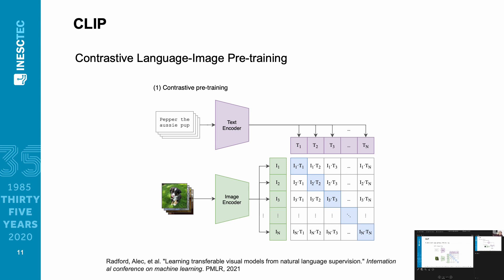In contrastive training, consider a batch of images and their corresponding texts. We want to maximize the similarity between the corresponding image-text pairs and minimize the distance between an image and the texts from other images in the batch — and vice versa. Looking at the matrix on the right, we want to maximize the diagonal and minimize everything else. This is a pretty simple concept and very efficient to implement.